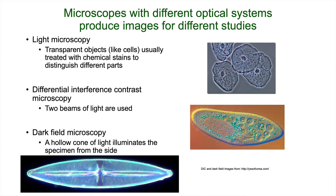There are many more microscopes besides these — we're just touching on a few. Many are used in special circumstances. For example, fluorescent microscopes are heavily used in immunology studies where we can tag antibodies with fluorescent dyes or fluorescent proteins, hit them with UV light, and they glow a certain color. There are different applications for the different scopes.